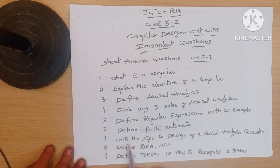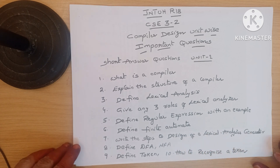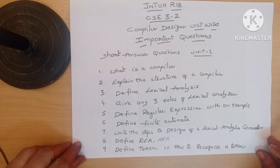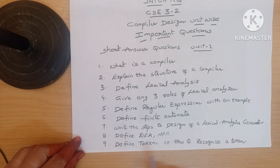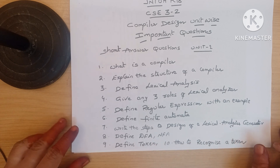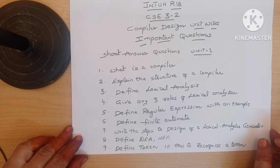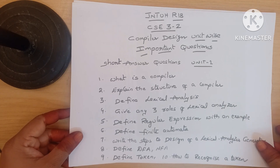Next: write the steps to design a lexical analyzer generator — an important question. Next: define DFA and define NFA — just definitions. Next: define token. And: how to recognize a token. These are the short answer questions in Unit 1.